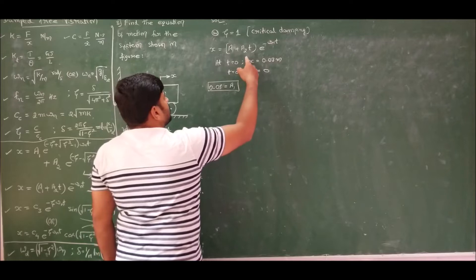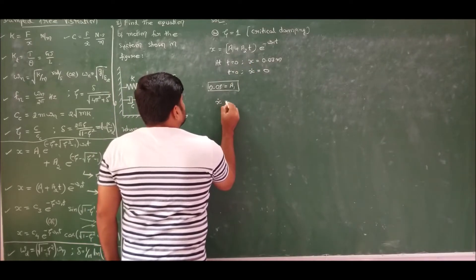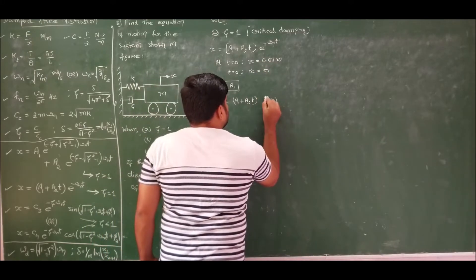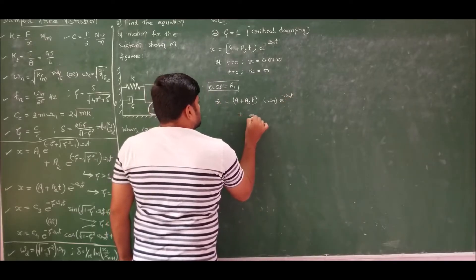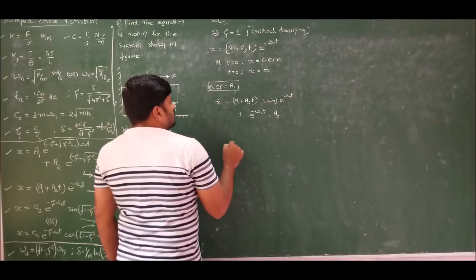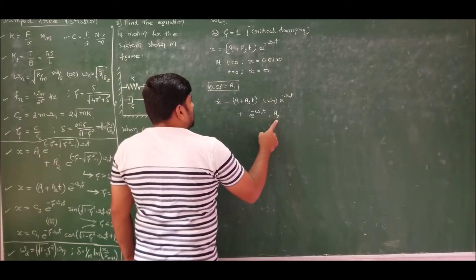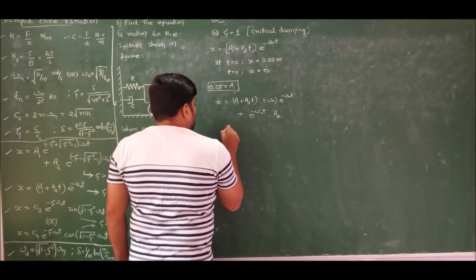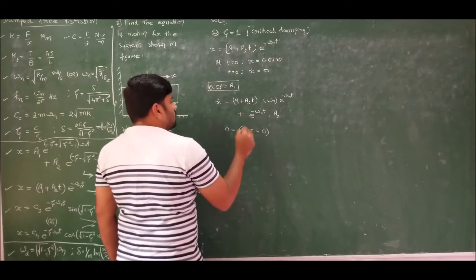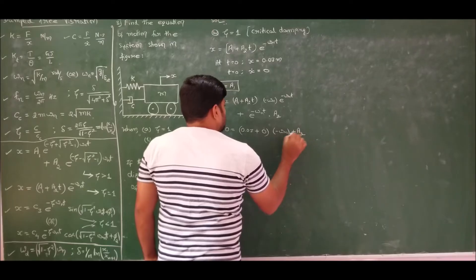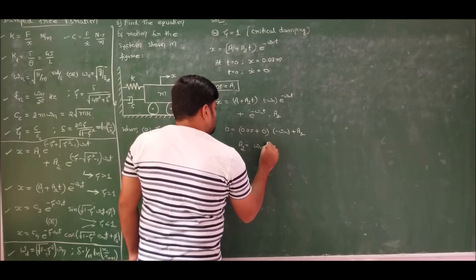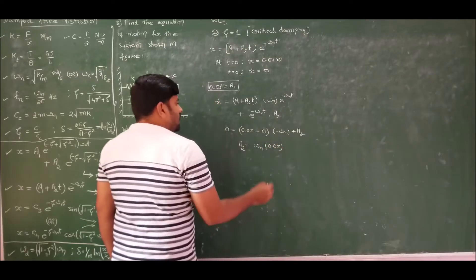Now use the second condition. To apply it, differentiate the system response with respect to time. Using the product rule: x-dot = (a1 + a2·t)·(−ωn)·e^(−ωn·t) + e^(−ωn·t)·a2. Substituting x-dot = 0 and t = 0: 0 = a1·(−ωn) + a2 = 0.03·(−ωn) + a2. Therefore, a2 = 0.03·ωn.